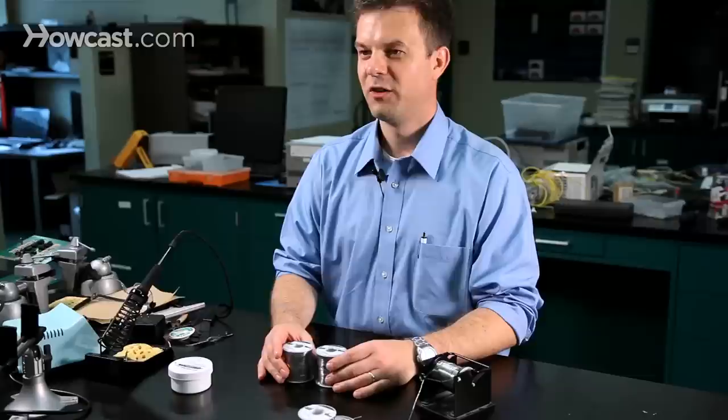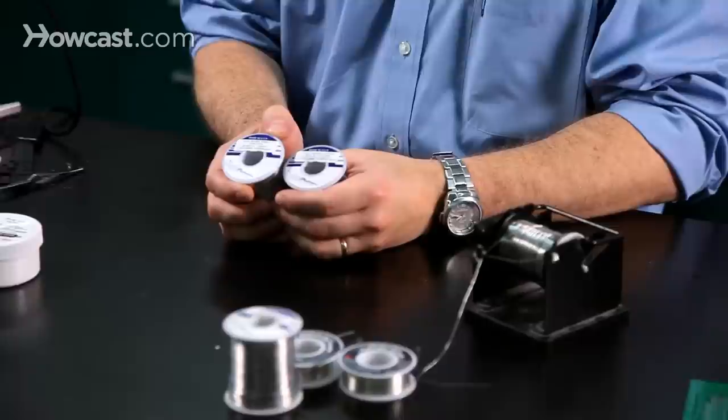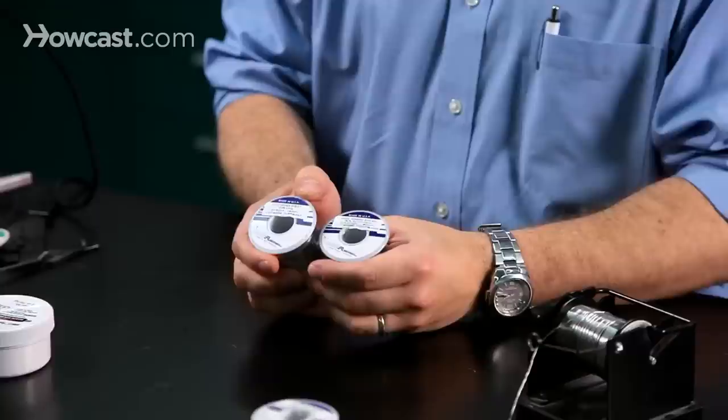Eutectic solder is a formulation that has a particular percentage of tin and lead. In this case, 63% tin, 37% lead.